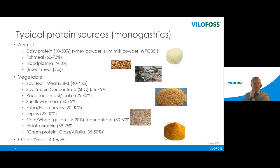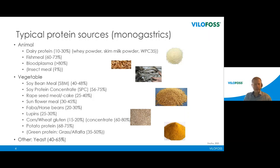Typical protein sources for monogastric animals include dairy protein — especially relevant for young mammalians. In feed it could be whey powder or skim milk powder, though skim milk powder is normally not price-competitive for animal feed when dairy product demand is high. Whey protein concentrate and some permeates are also relevant. Fish meal is widely accepted as a high quality protein source for piglets, but be aware that quality can be very variable — fish meal must be good quality to be considered a high quality source.